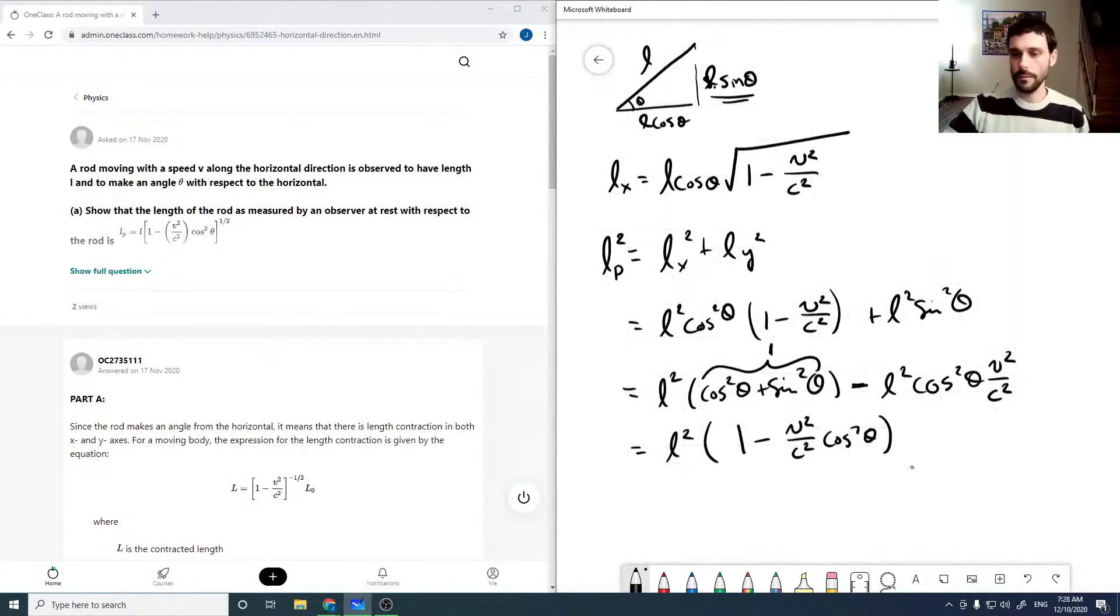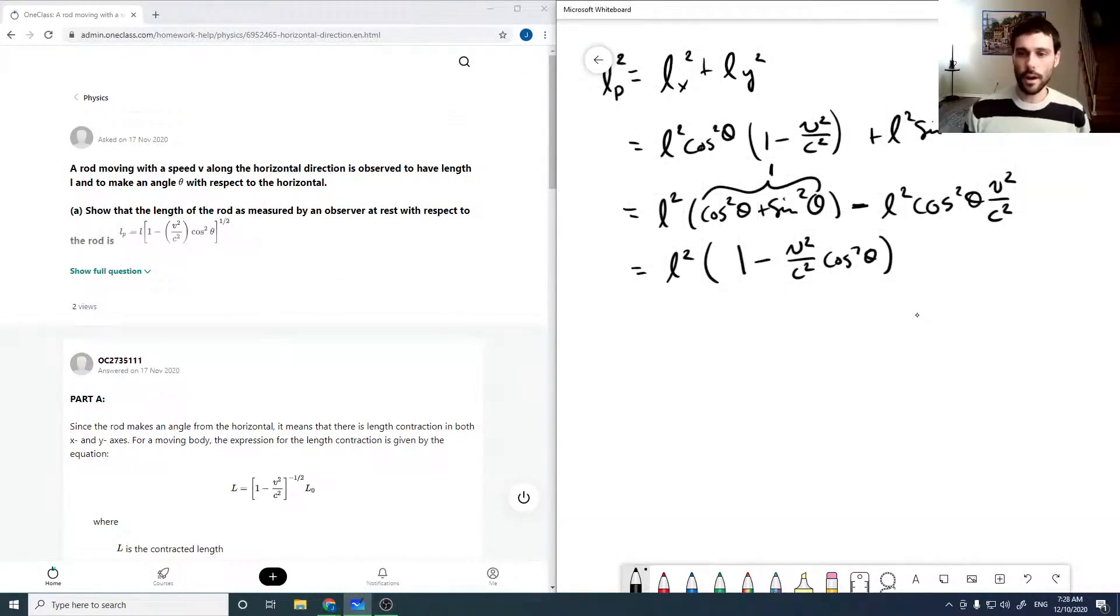That way we can differentiate. So then our LP, taking the square root of both sides, is then L root 1 minus V squared over C squared cos squared theta. And so that was what we were asked to find, or show. So that looks good.